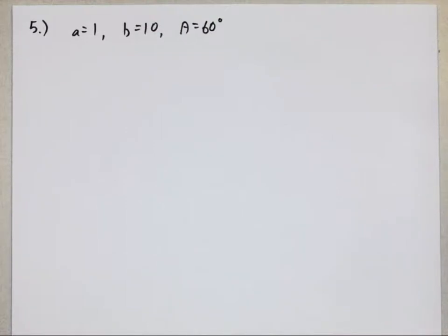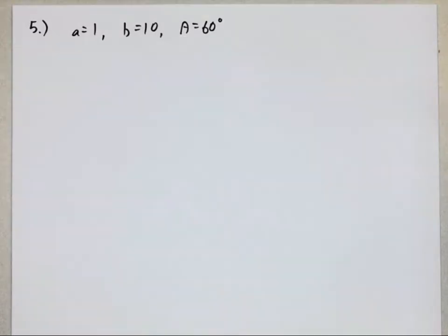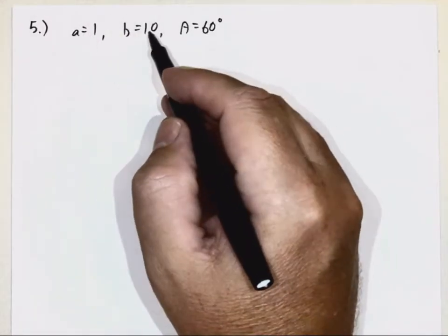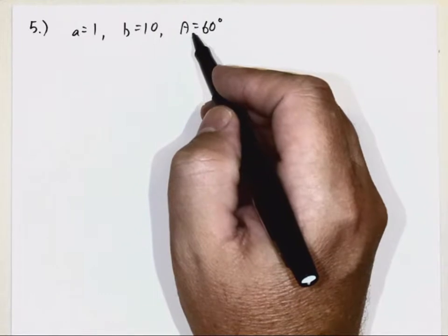This is part two of the Math 137 online final exam review. We're ready now for problem five. This is once again a triangle problem, and they tell us that side A is 1, side B is 10, angle A is 60 degrees.